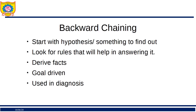Backward chaining starts with a hypothesis or goal — what you want to prove or find out. Unlike forward chaining which is data-driven, backward chaining is goal-driven. We start with the goal and use rules to derive the supporting facts.